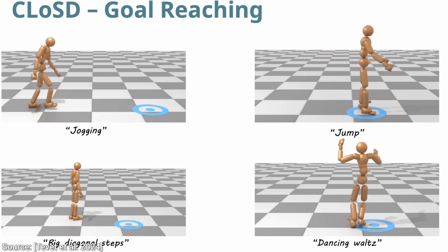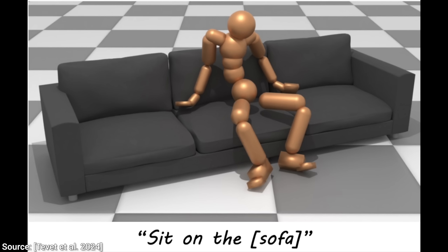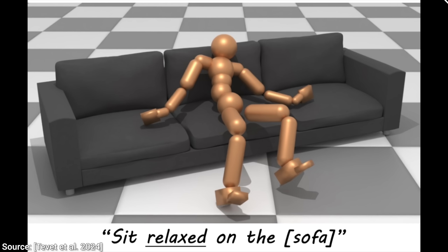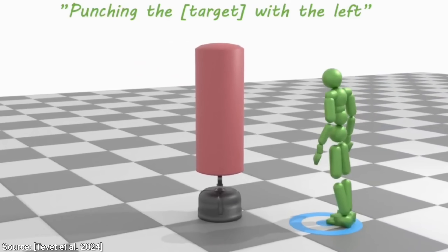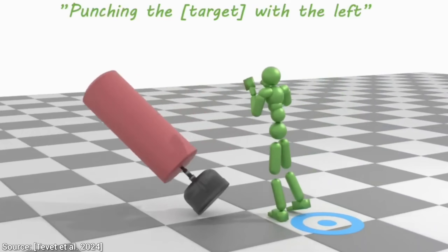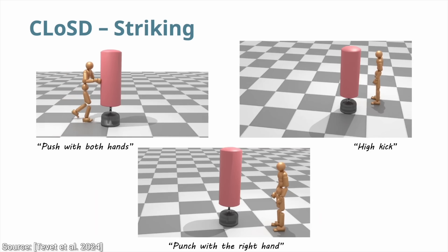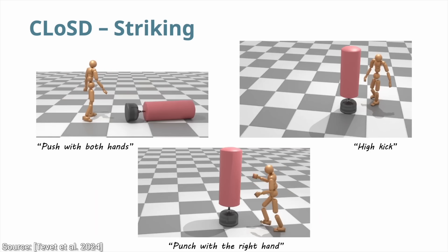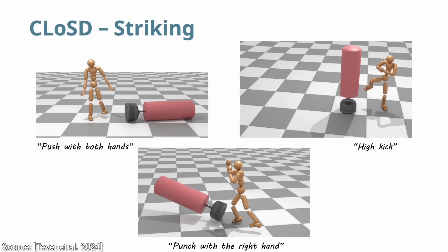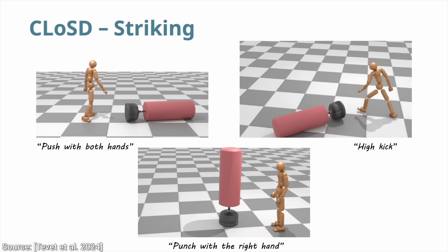So cool. We can tell it to sit down on the sofa and relax. I said relax. Now we're talking. And those merciless attacks can now not only be punches — these finally work now — but with the power of text prompting, it can also push with two hands or even do a high kick.